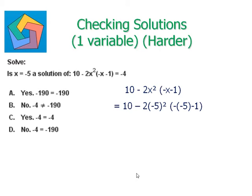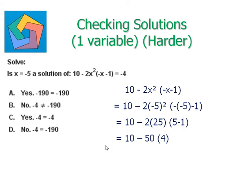Solving the exponents and parentheses first by the PEMDAS rule, we get 10 minus 2 times 25 times (5 minus 1). We get a positive 5 here because the two negatives multiply to become a positive sign, and the square of any negative number is always positive. So we get 10 minus 2 times 25 times 4, which becomes 10 minus 50 times 4, giving us 10 minus 200.